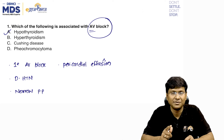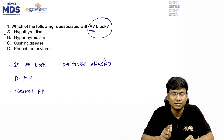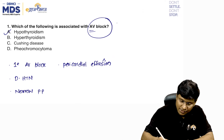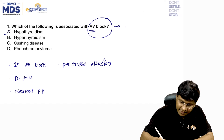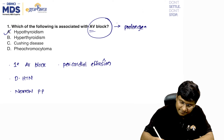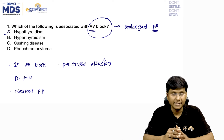AV block is also a feature of hypothyroidism — specifically first degree AV block. How will you identify first degree AV block on the ECG? On the ECG you will notice that there is a prolonged PR interval.